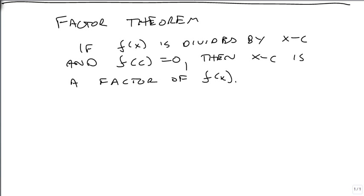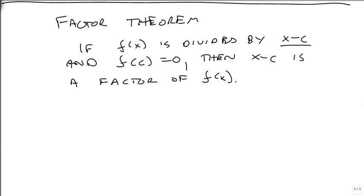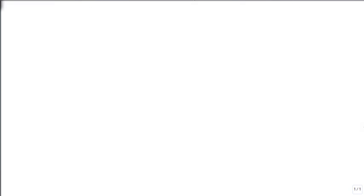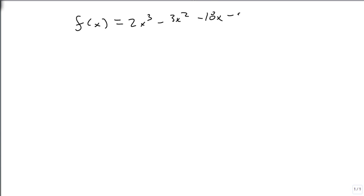then x minus c is a factor of f(x). In other words, this is one way of seeing what undoes the division, or the multiplication of two polynomials. So we could almost get back to f times g if we started with h and we're given x minus c. So to show this in practice,